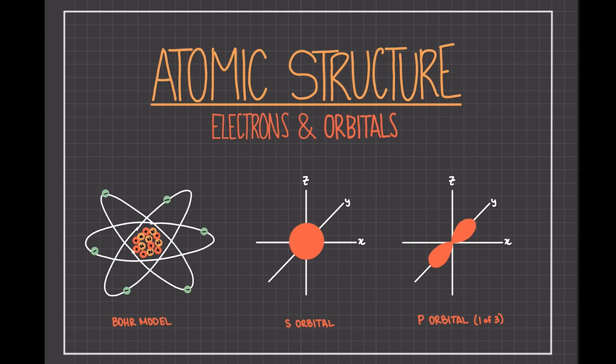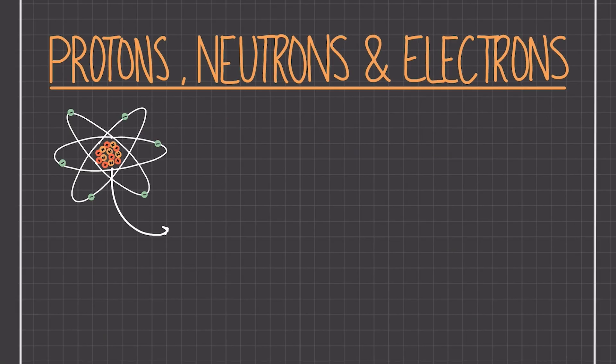Before getting into chemistry, it is important to understand what we're working with. The basic unit of life is the atom. Within the atom there is the nucleus, which contains the protons and the neutrons of the atom.